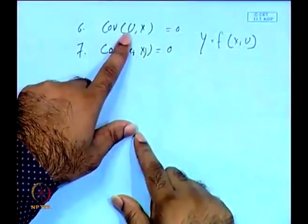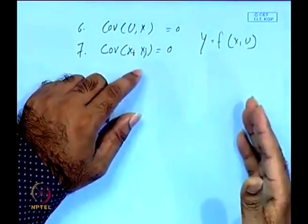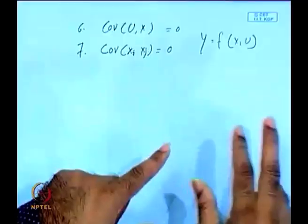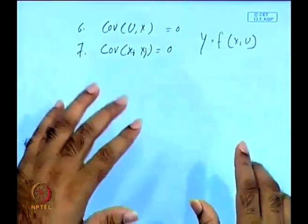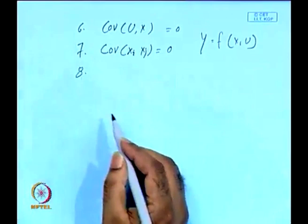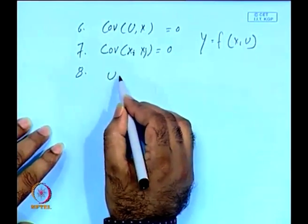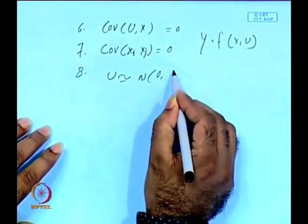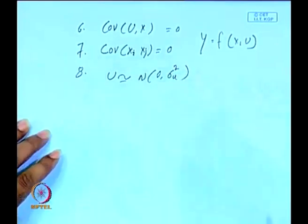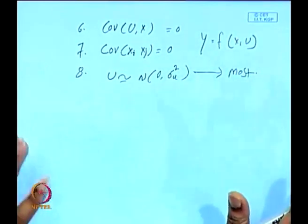There should be no association between x and u. The seventh assumption is that the error term should follow a normal distribution with zero mean and unit standard deviation, written as u ~ N(0, σ²). This is the most important assumption for this econometric modeling.